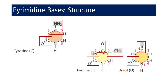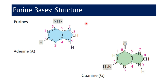Coming to uracil: in nucleic acid structures, uracil is only confined to RNA; it is not found in DNA. These are the three major pyrimidine bases, but there are also minor pyrimidine bases such as 5-hydroxymethylcytosine and methylated or reduced derivatives of uracil.